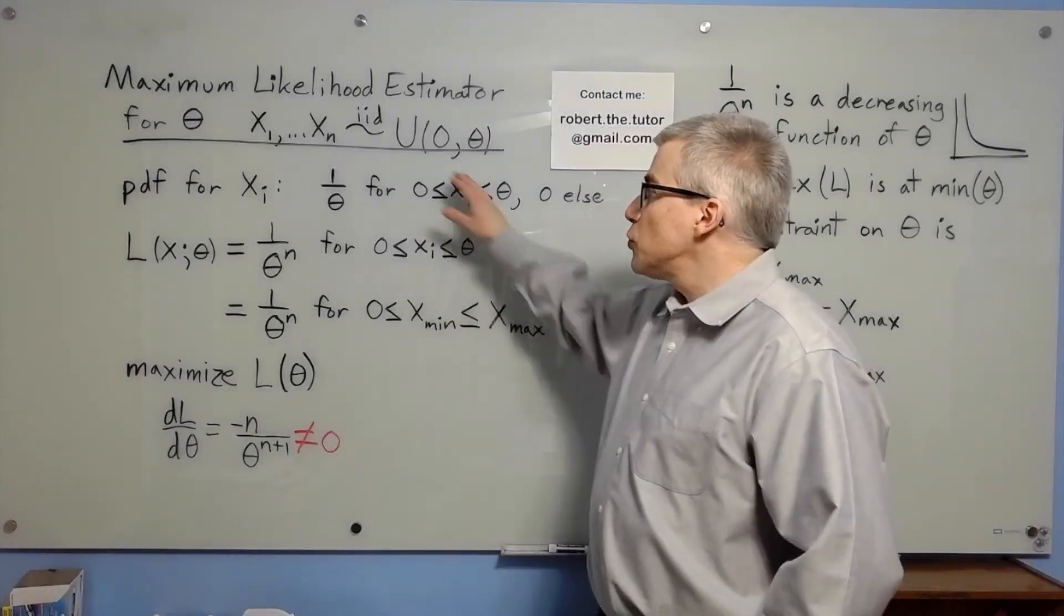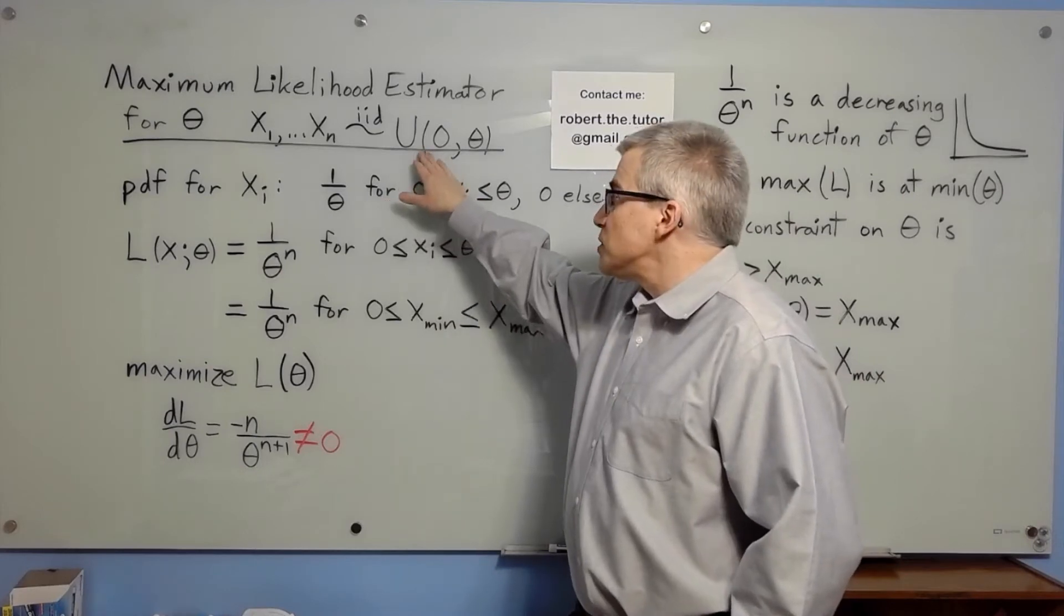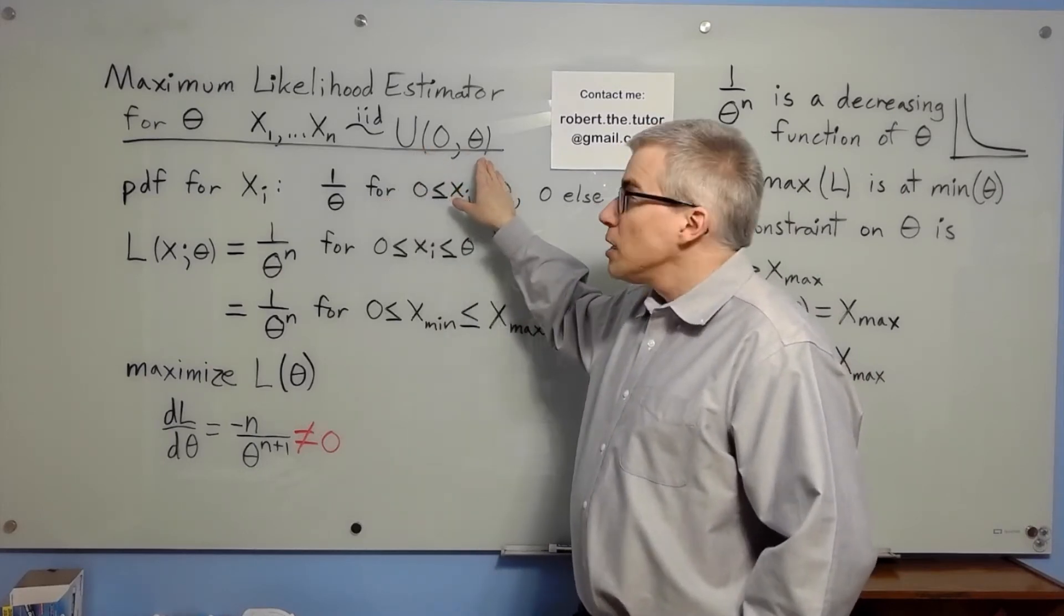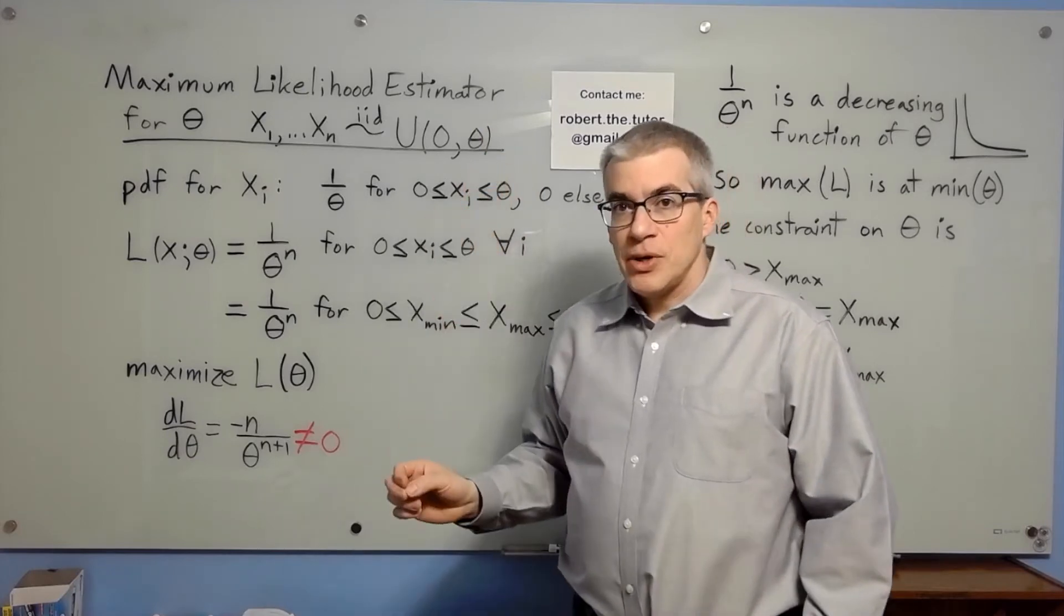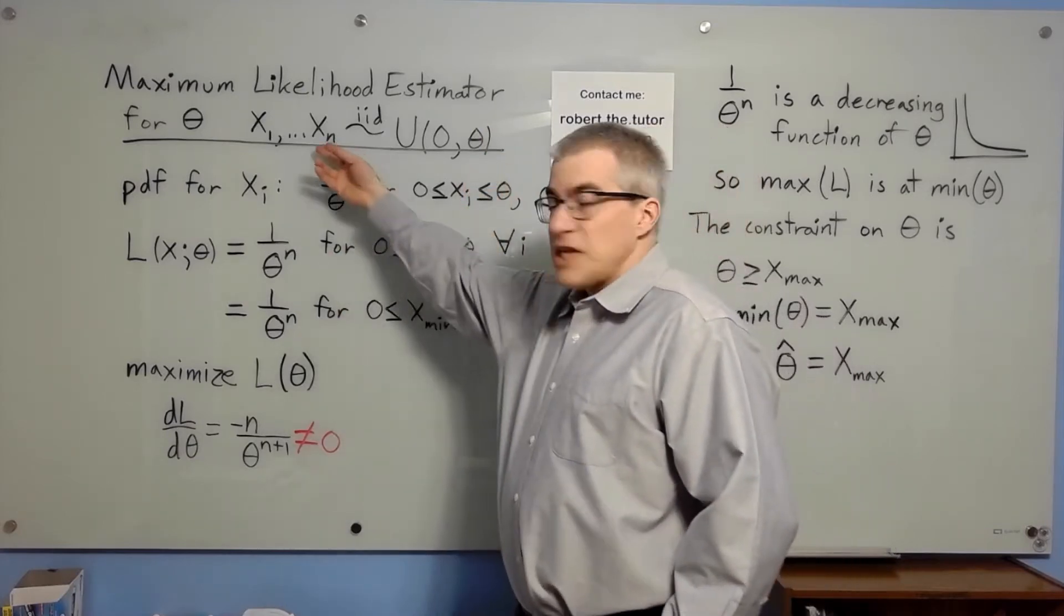Suppose we have a uniform distribution from 0 to theta continuous, and we'd like to find the maximum likelihood estimator for theta given a sample of data x1 to xn.